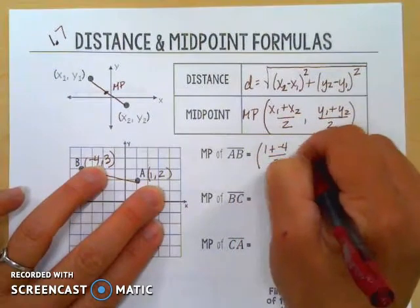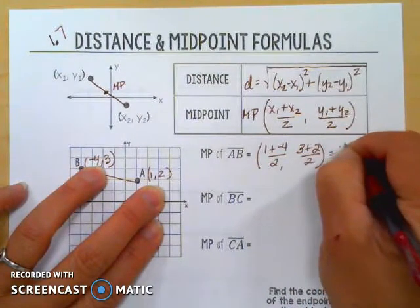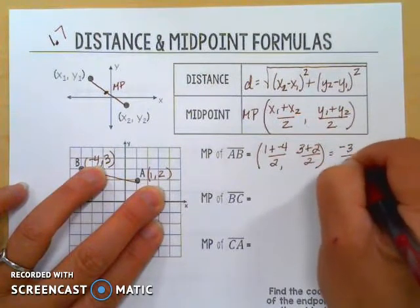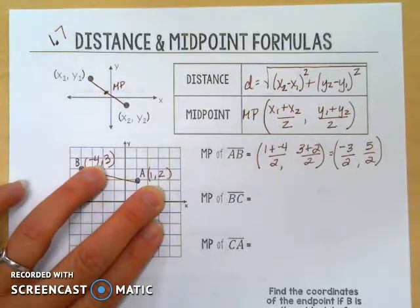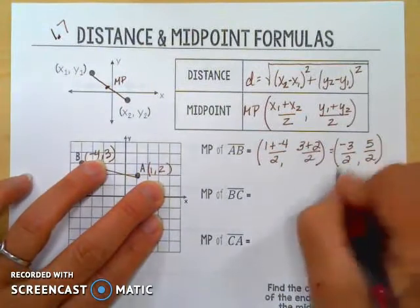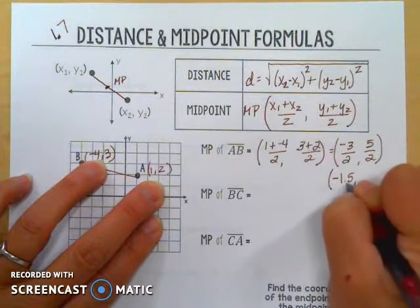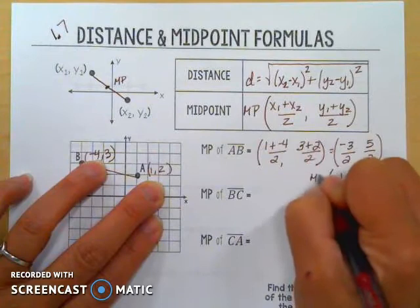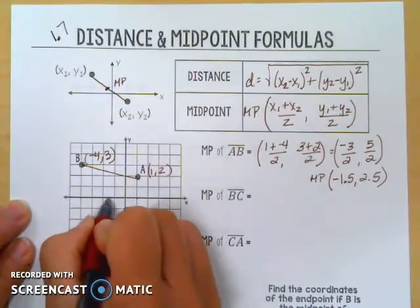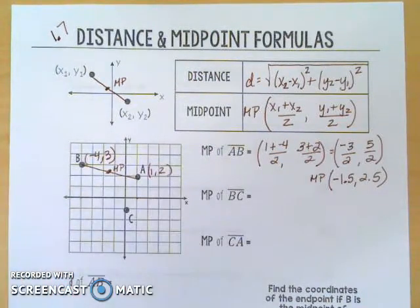If I add the y's together, that's 3 plus 2 divided by 2. That gives me negative 3 over 2 for the x and 5 over 2 for the y. It's a little strange to leave them in fraction form, so converting to decimals: that's negative 1.5 and positive 2.5. Looking at the grid, negative 1.5, positive 2.5 is right there — that's the middle of that segment.